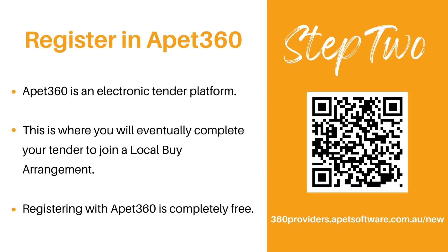Step 2: Register in APET 360. APET 360 is an electronic tender platform. This is where you will eventually complete your tender to join a Local Buy arrangement. Registering with APET 360 is completely free.